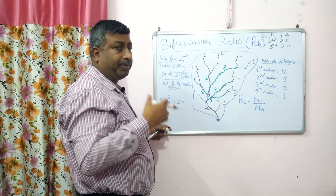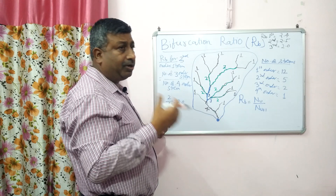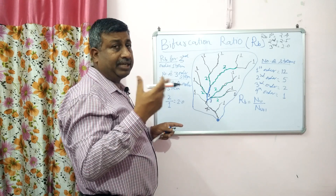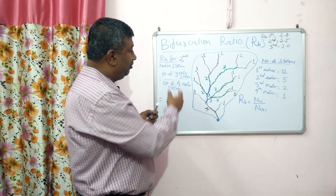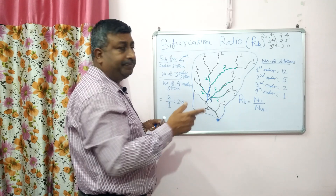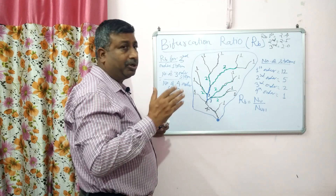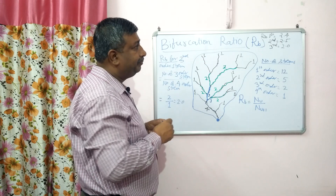Bifurcation ratio for the fourth order cannot be calculated because there is no next higher order stream.